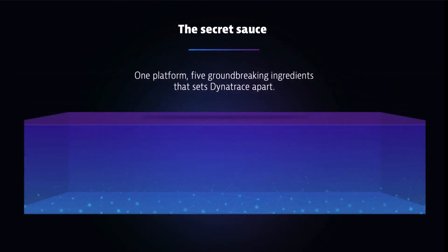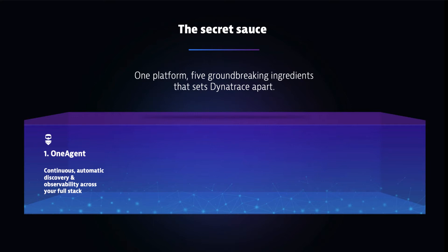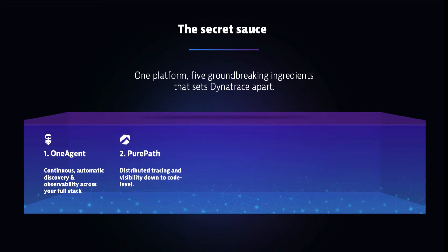Let me introduce the technologies that make up Dynatrace. We have five technologies that set us apart. First, OneAgent continuously monitors your environment by installing at the host level, whether Windows or Linux, discovering processes and services. We put these things into context through what we call PurePath, our distributed tracing technology that goes across tiers. We also natively support OpenTelemetry as part of a collector to integrate OneAgent pure paths with open tracing standards.